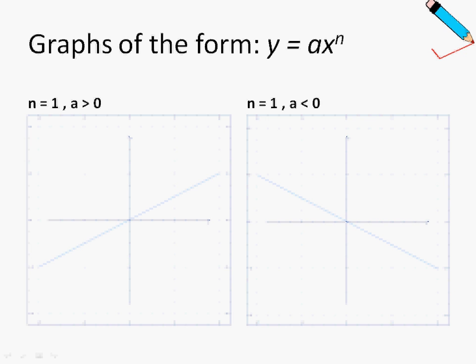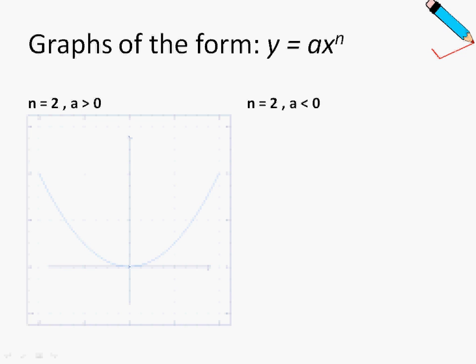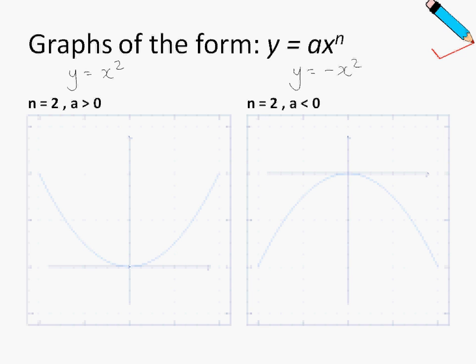There are still a few more graphs to go. For those requiring extra explanation I will pause; otherwise I will just show the graphs. This next graph is probably more familiar — this is what we call a quadratic graph. For example, y equals x squared will look like this. When a is negative, y equals negative x squared, the graph will look like this.